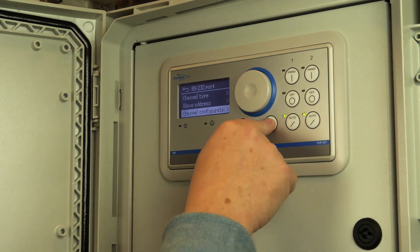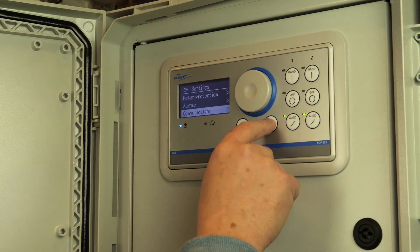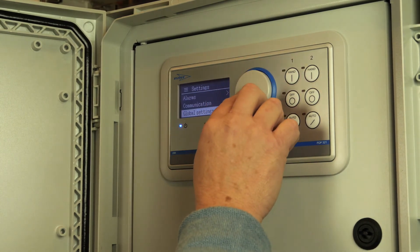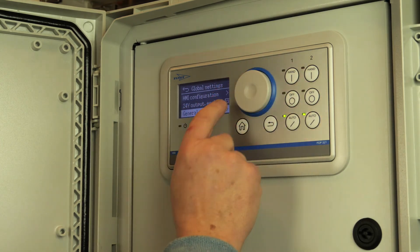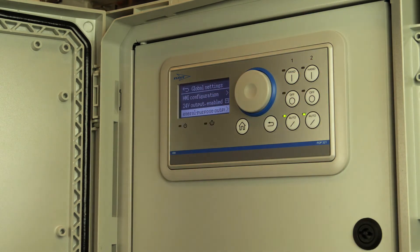Just one little bit more, and that's in global settings. You can go all the way down to 24 volt output and check that it's ticked, so you get a voltage supply from the FGC 400 that will feed into the modem. That's it.